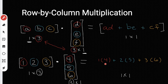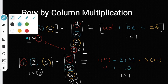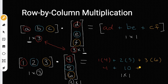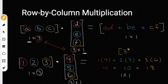Simplifying a little bit: we know that 1 times 4 is 4, 2 times 5 is 10, and 3 times 6 is 18. So we're going to have 4 plus 10 plus 18. Adding them up: 4 plus 18 gives me 22, and 22 plus 10 gives me 32. So my answer is going to be 32 in brackets — my 1 by 1 matrix. Notice it has 1 row and 1 column.